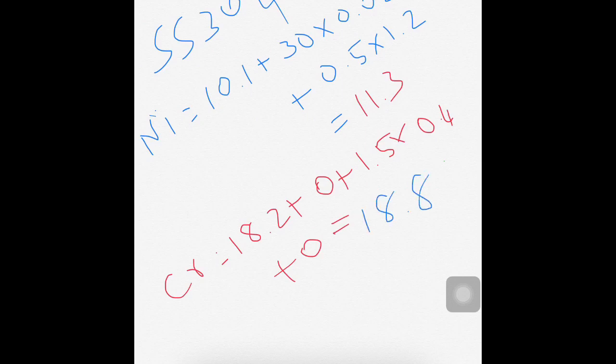Similarly, we can calculate the nickel and chromium equivalent value for consumable also. For example, SS309L, the nickel equivalent is 14.35 and chromium equivalent value is 24.9.